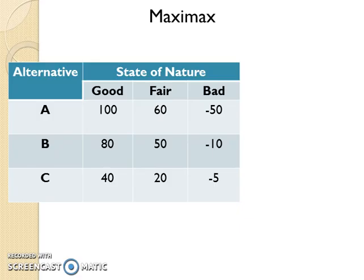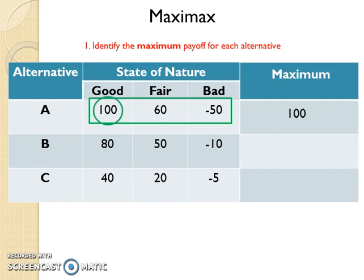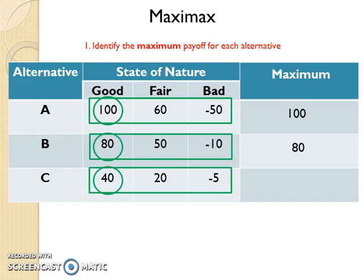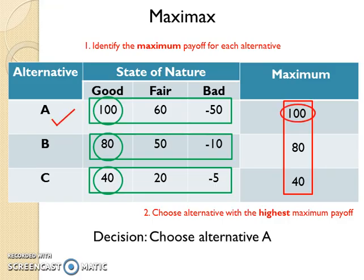To make a decision by using the Maximax method, first add a column to the payoff table, name it as 'maximum', and then identify the maximum payoff for each alternative. For example, for alternative A the maximum payoff is 100, so write 100 in the maximum column. Do the same for the other alternatives. Among all these maximum payoffs, identify the highest value. Here the highest value is 100, therefore the decision is to choose alternative A.